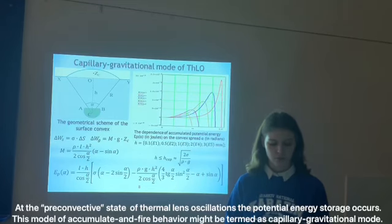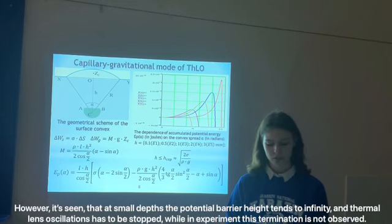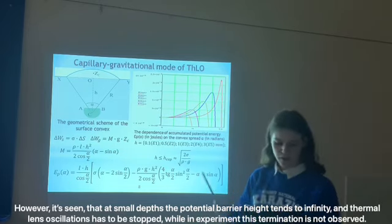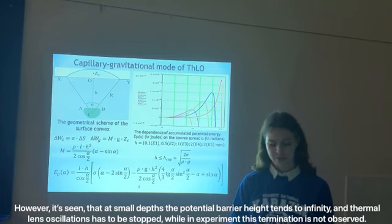At the pre-convective state of thermal lens oscillation, the potential energy oscillation occurs. This model of accumulate and fire behavior might be termed as capillary gravitational mode. However, it is seen that at small depths the potential barrier height tends to infinity and thermal lens oscillation has to be stopped. While in experiment the cessation is not observed.